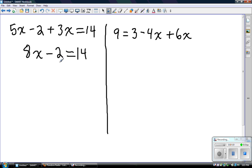We're always going to use our opposite operations in balance in order to solve. We're going to add 2 to both sides of the equation in order to cancel out the minus 2. We're left with 8x equals 14 plus 2, which is 16.